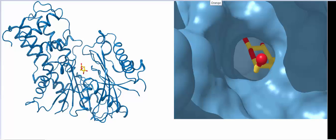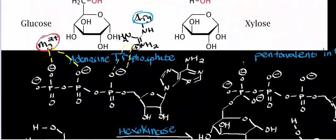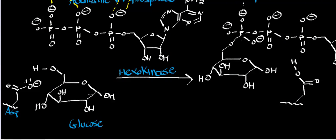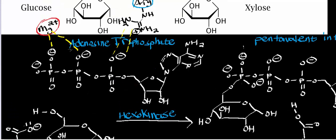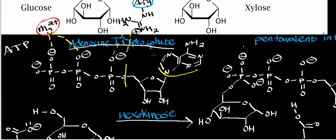Now that we've talked about what hexokinase is for, let's talk about how the enzymatic reaction works. We're going to take glucose and react it with adenosine triphosphate (ATP). ATP has the adenine nitrogenous base, the ribose ring, and three phosphates attached to the 5-prime position of the ribose ring. ATP is going to bind into one region of the active site, and there are residues and metal cations that stabilize it there.